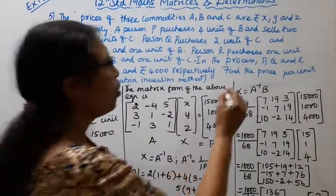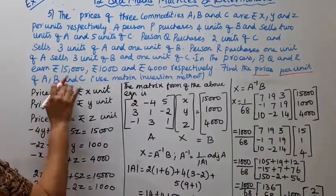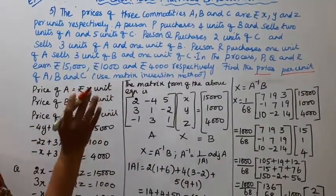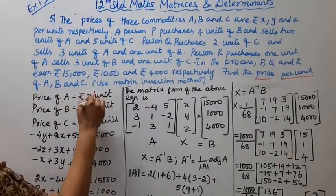Find the prices per unit of A, B and C. Use matrix inversion method. Price of A commodity, rupees X per unit.